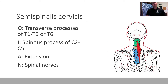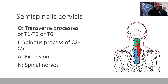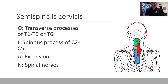Two more to go and we're done with muscles for the semester. Semispinalis cervicis originates from the transverse processes of the upper thoracic vertebrae and inserts into the spinous processes of C2 through C5. So this is an extensor — posterior means extension, anterior means flexion. Like the others in this vicinity, it gets its innervation from the spinal nerves.